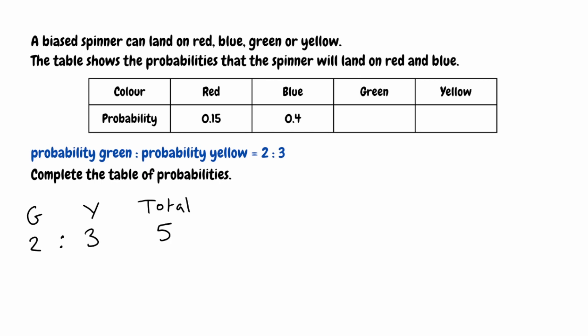So we have 2 parts for green and 3 parts for yellow, giving a total of 5 parts. We've been given the probabilities of red and blue, so we can figure out the probabilities left over since all probabilities should add up to 1. Adding the given probabilities: 0.15 for red add 0.40 for blue gives us 0.55. To figure out what's left over, we do 1 take away 0.55, and that leaves us with 0.45.